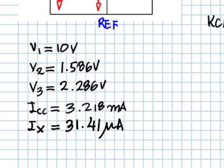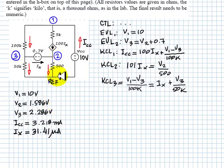The voltage V1 is 10 volts. The voltage V2 with respect to the reference is 1.586 volts, and the voltage V3 with respect to the reference is 2.286 volts. The current ICC, this one, is 3.2 milliamps, and the current Ix is 31 microamperes.